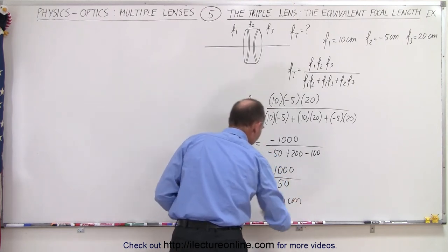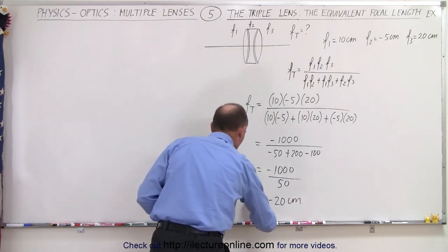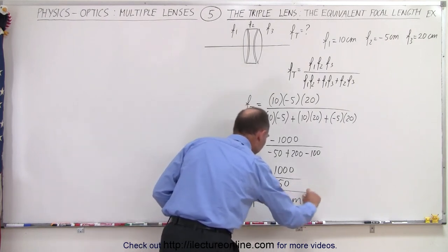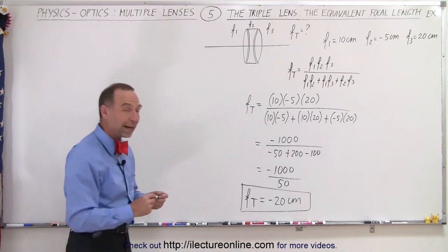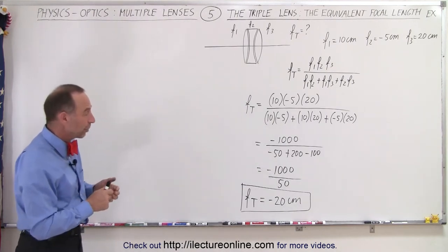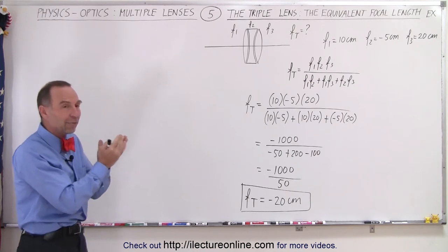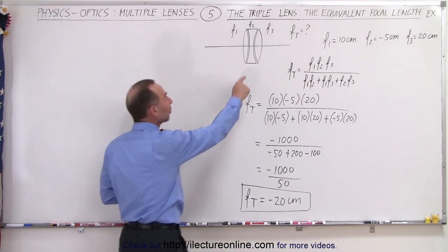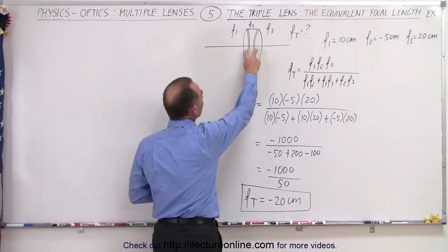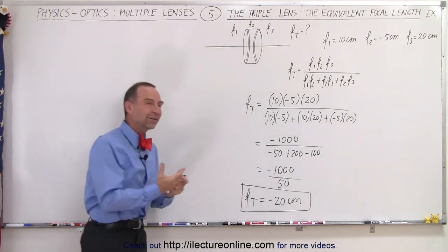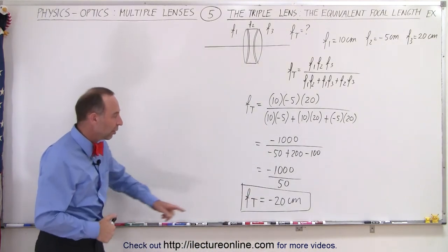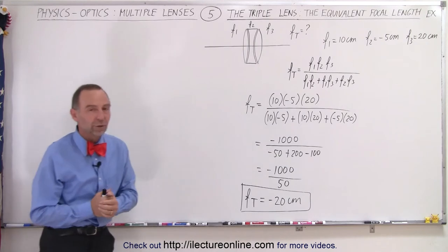And now you add the units since we're dealing with centimeters. Notice that the total focal length of the three lenses combined have a negative number, minus 20 centimeters, which means that the three combined act like a diverging lens, which means that the one diverging lens overpowered the other two converging lenses. Together they act like a diverging lens with a focal length equal to minus 20 centimeters.